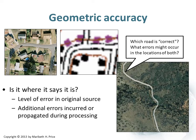Looking at that middle map, you don't really know, so you have to investigate it further. Looking at the bottom right image, you'll notice we have a feature overlaying an aerial photo, and the road feature doesn't line up with the road in the picture. The caption asks: which road is correct, and what errors might occur in both locations?